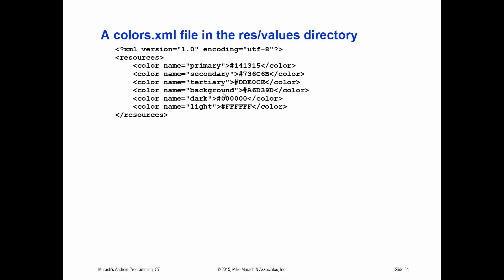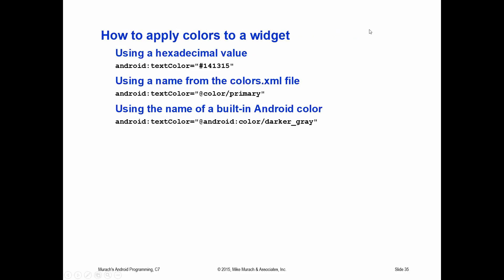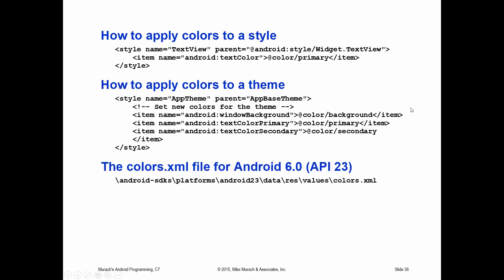There are examples showing how to apply colors to a widget in three ways: first, you can use a hex value directly; second, you can use the name of a custom color defined in your colors.xml; and third, you can use a style to apply a color. You can also apply a color by overriding the default colors of the theme. The colors.xml for Android API 6.0 is referenced with a URL at the bottom of the slide.